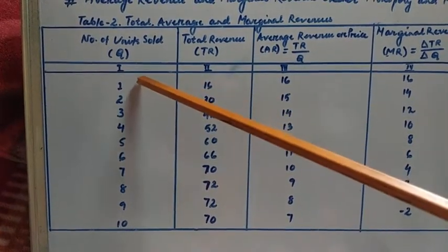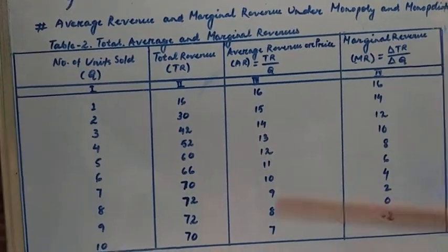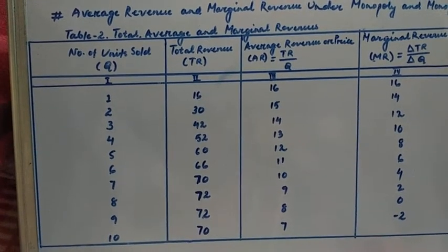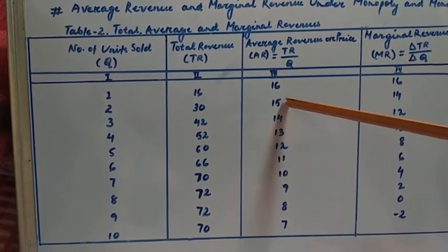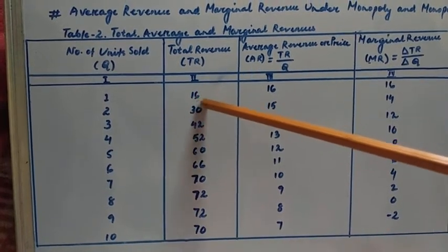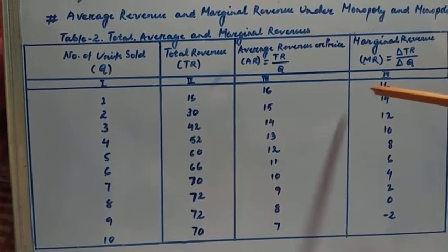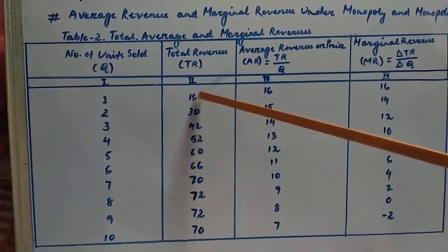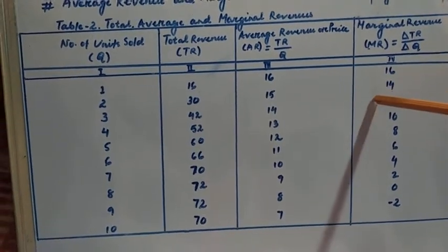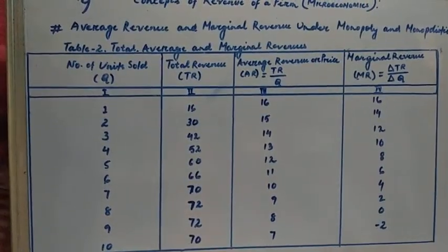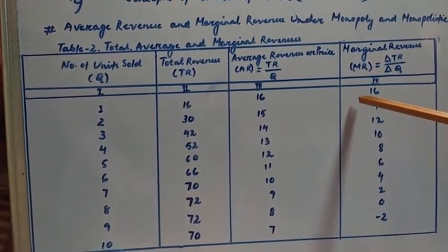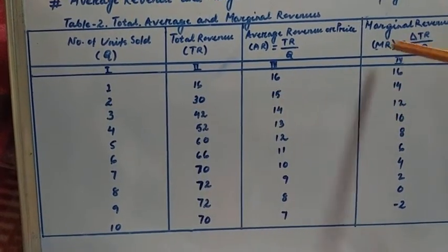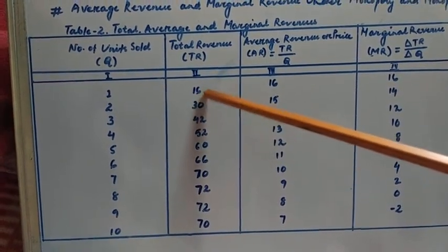When it comes to marginal revenue, we find it by taking the differences between two successive total revenues. By computing these differences, we obtain the marginal revenue recorded in column four. Under imperfect competition, marginal revenue is obtained from total revenue by taking the difference between successive total revenue values.